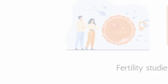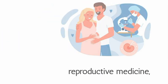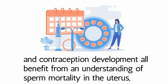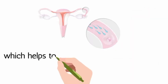Fertility studies, reproductive medicine, and contraception development all benefit from an understanding of sperm mortality in the uterus, which helps to explain the complexities of conception and the obstacles sperm face on their way to fertilizing an egg.